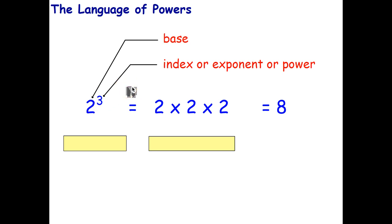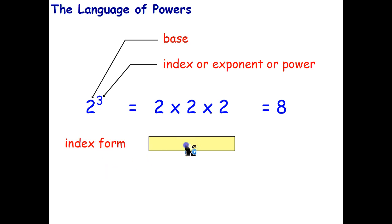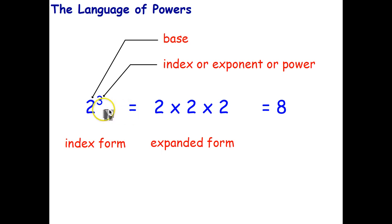2 to the power of 3 is just a shorthand way of writing 2 times 2 times 2. When you write the shorthand form that's called the index form, and when you expand it that's called the expanded form. One of the first things you have to be able to do is turn something in index form into expanded form, and an expression in expanded form back into index form.